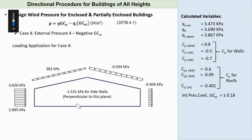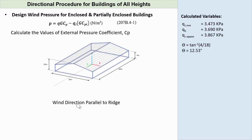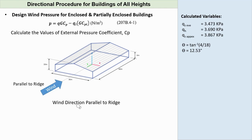Displaying the wind load summary for wind acting normal to ridge. Now for design wind pressure acting parallel to ridge, we have to recalculate the values of the wind external pressure coefficient CP, since the wind direction has changed.